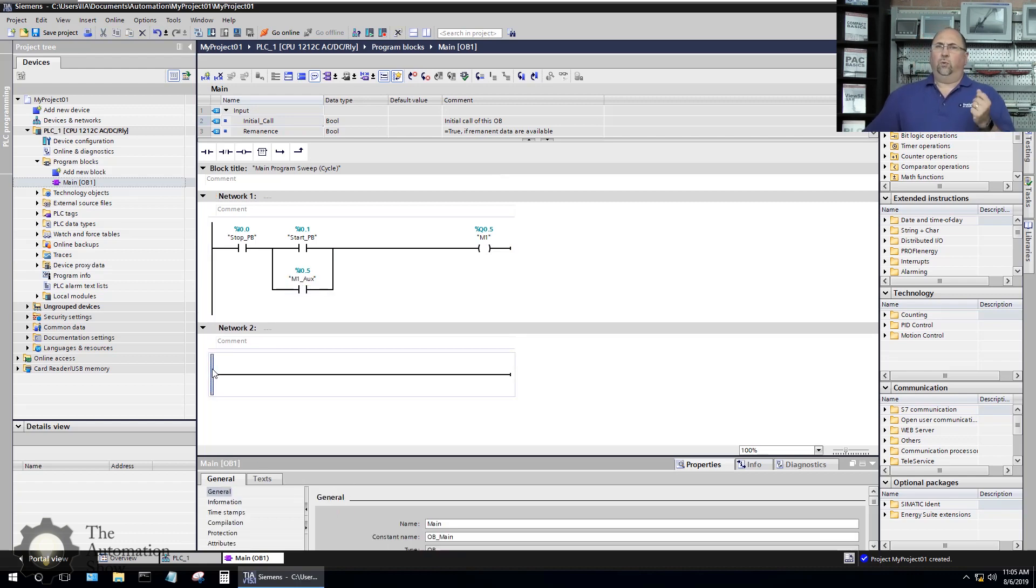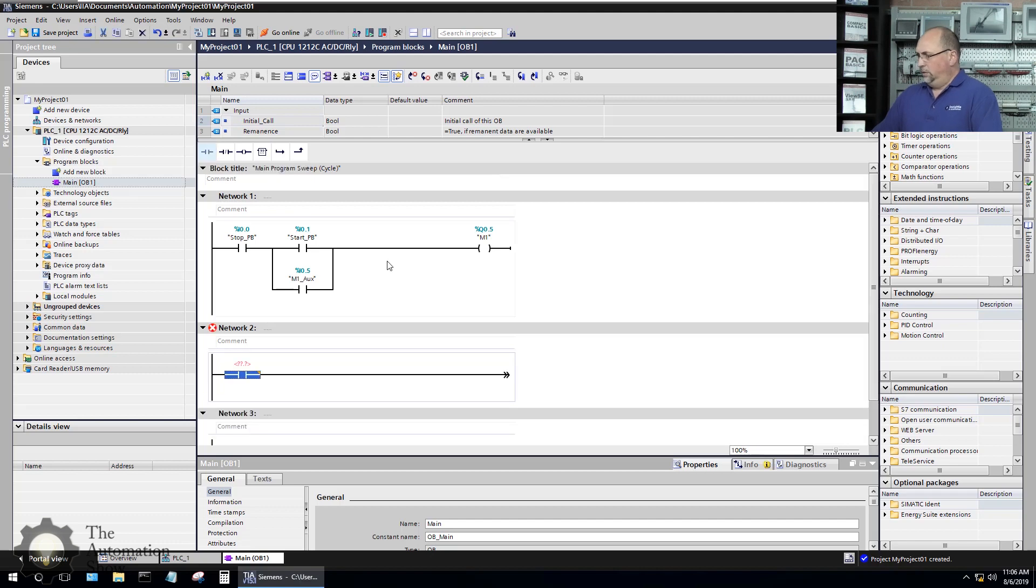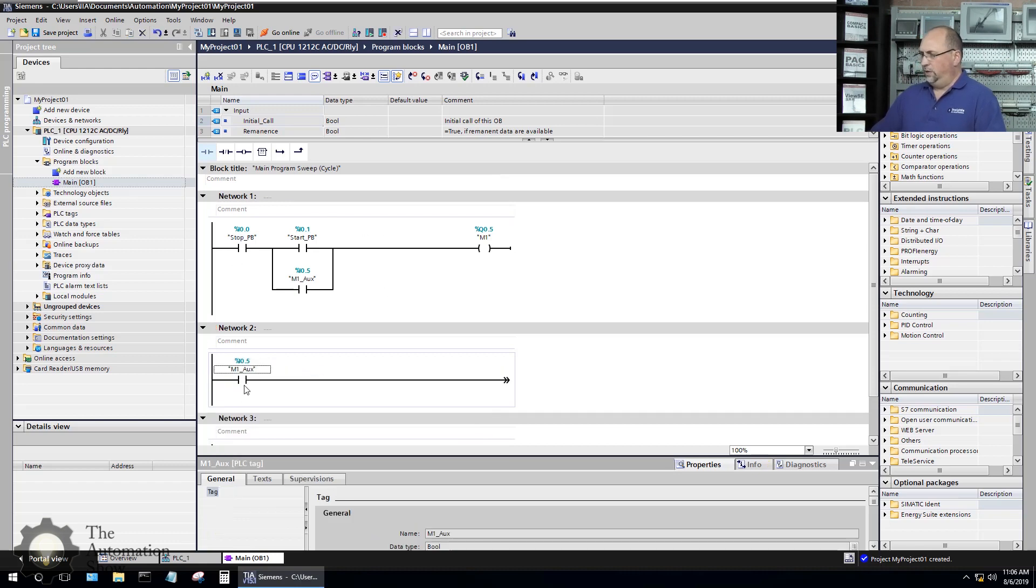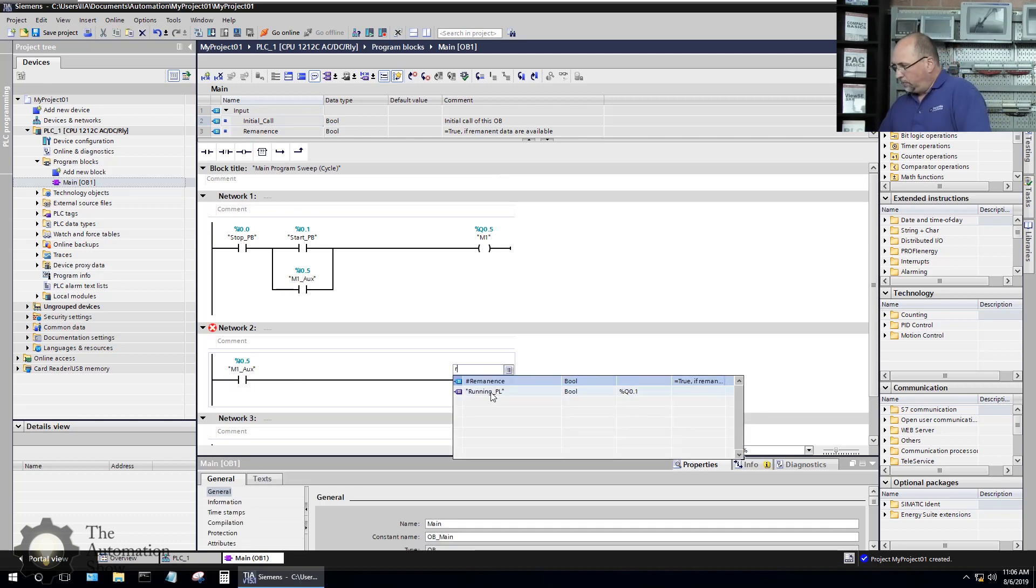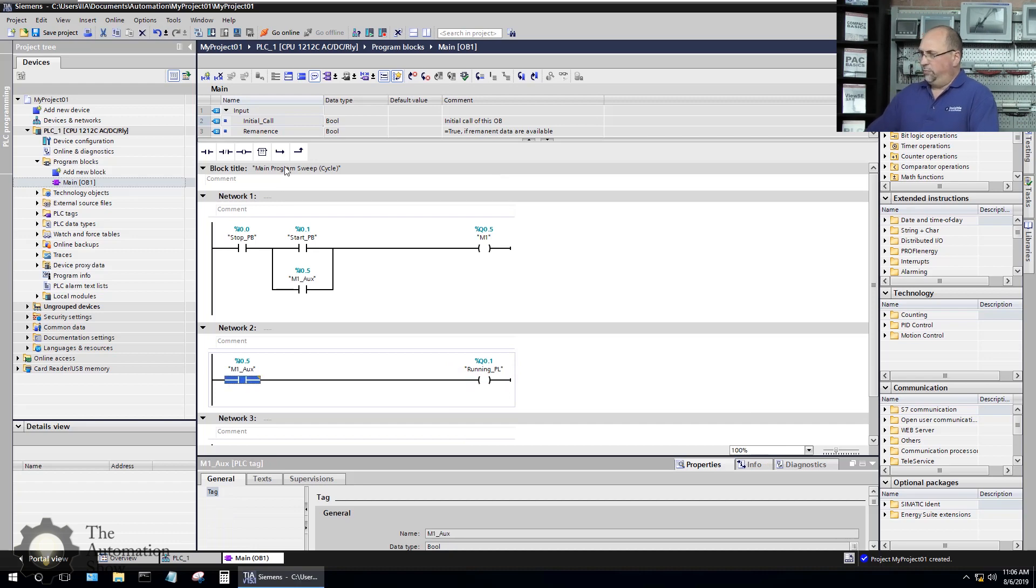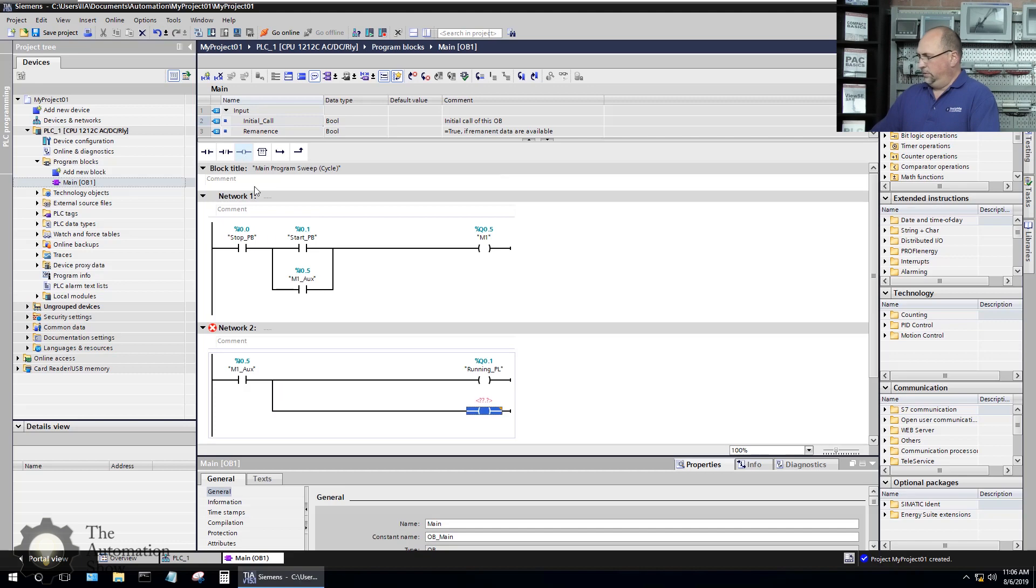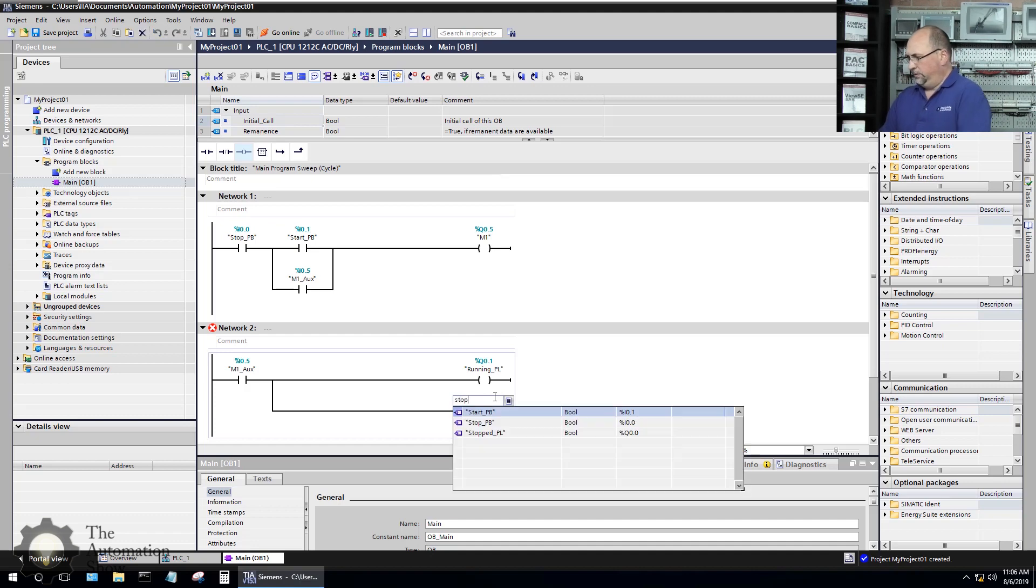All right. Now, on my second rung, what I want to do is put the code for the LEDs. So basically, I want the green LED to come on when the auxiliaries are on and the red LED to come on when the auxiliaries are off. So let's go ahead and put that in there. We'll add a M1UX here. The auxiliary contacts are on. So we want to turn on the running pilot light.